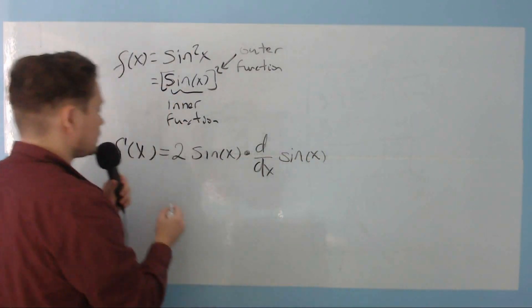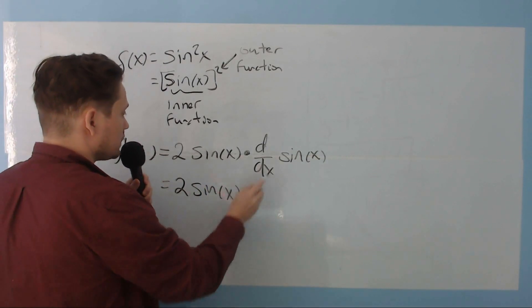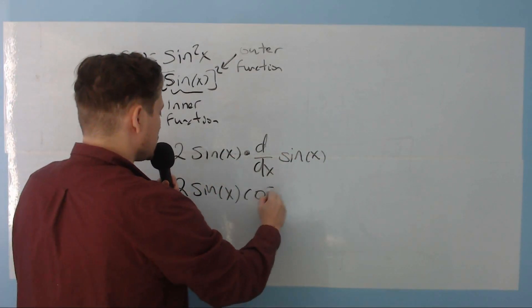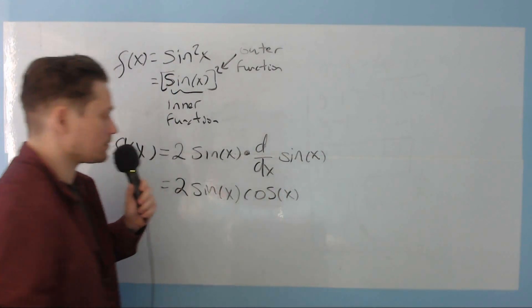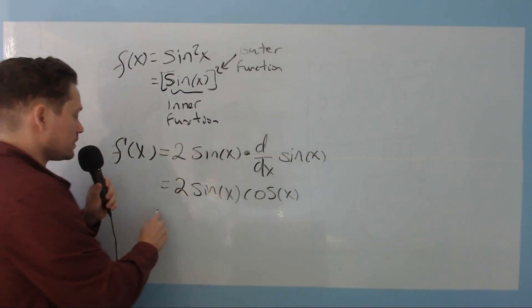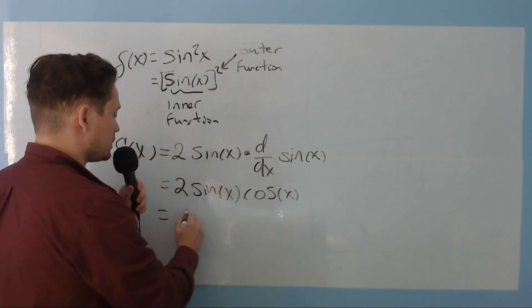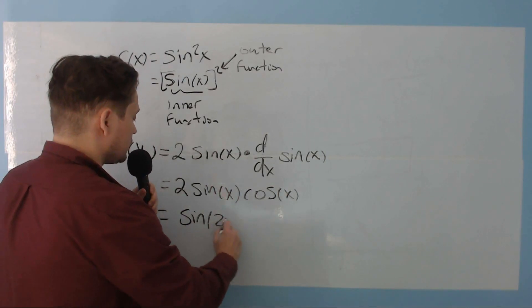Let's clean this up a little bit, so it looks like this. 2 sine of x. The derivative of sine of x is cosine x. And this is a form of the derivative, 2 sine of x cosine x. But there's also a basic trig identity that says you can write 2 sine of x cosine x. You can rewrite this as sine of 2x.